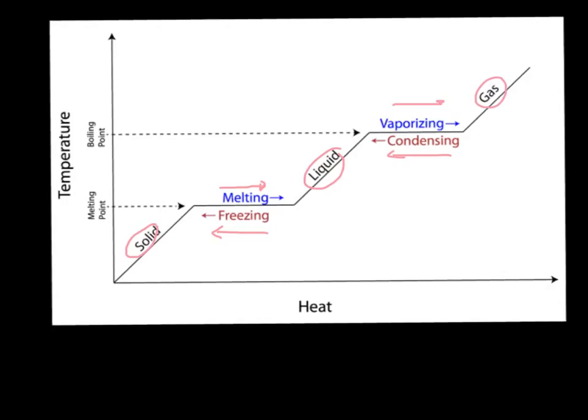In order to do these things, we have values. All of these areas where there's a change in temperature, we can find the heat by saying Q equals MC delta T. But these areas where there's a plateau, there's no change in temperature, so that's not going to work. Instead, we have the heat of fusion and the heat of vaporization.